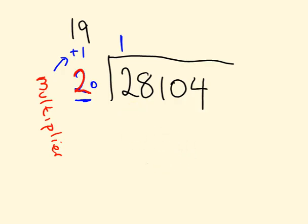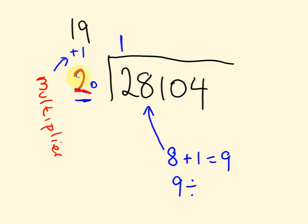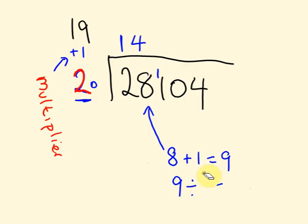On to the next number: 8. What do I do to this 8? I add the previous answer digit (1) times the multiplier (1), so 1 times 1 is 1. Eight plus 1 equals 9. Now 9 divided by 2 equals 4 with a remainder of 1. I'm going to take that remainder of 1 across to the next part of the question, and put 4 down as the next answer digit.